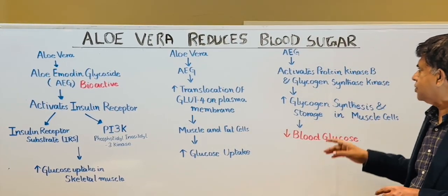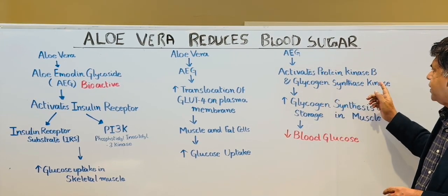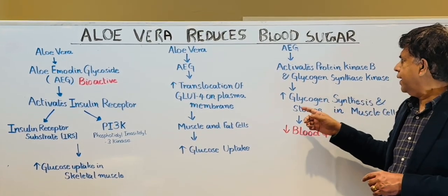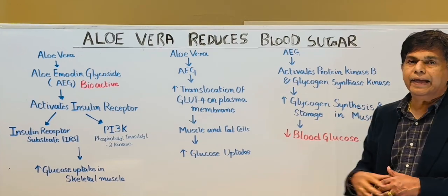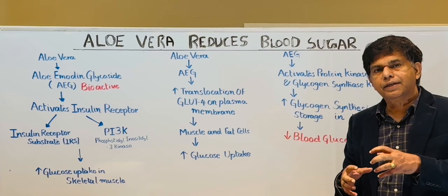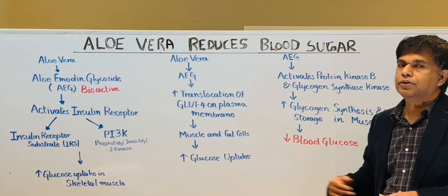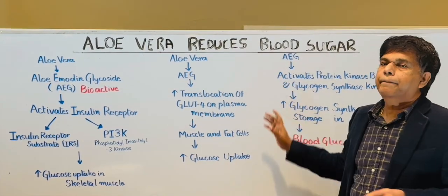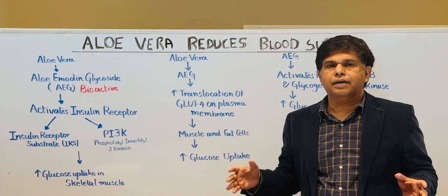The last mechanism: Aloemidine Glycoside activates protein kinase B and glycogen synthase kinase, which increases glycogen synthesis in the cell. Glycogen is stored as glucose is converted into glycogen for later use. As a result, your blood glucose goes down. These are the three main mechanisms by which aloe vera can lower blood sugar.